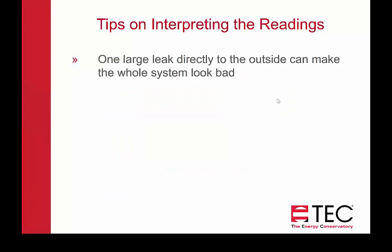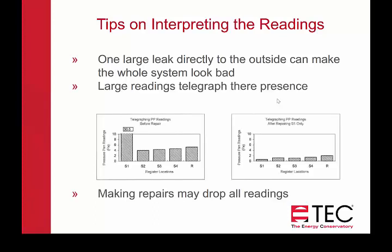Again, one leak directly to the outside can make the whole system look bad. In this example, we've got one supply register where we're getting a reading of 30.6 pascals, and it telegraphs through the other ones — all of our other readings are between four and five. It looks like we've got a lot of potential leakage, but they made the repairs on that one duct and all of the pressures throughout the whole system dropped. That's one thing to look for: is there just one really high number that's dominant? If so, seal that one and then take your measurements again before going after other leaks.